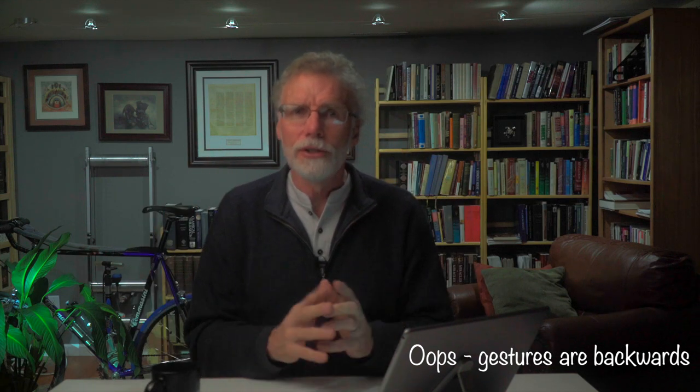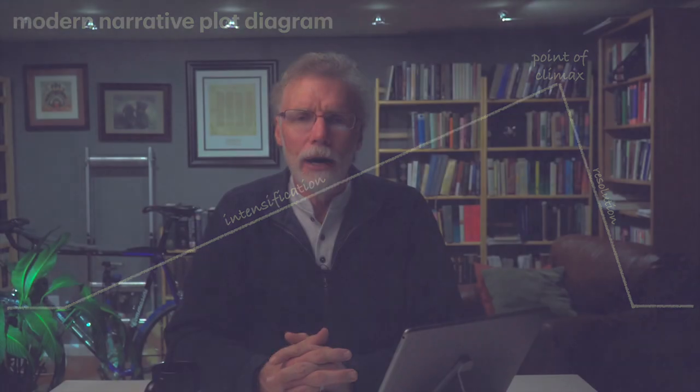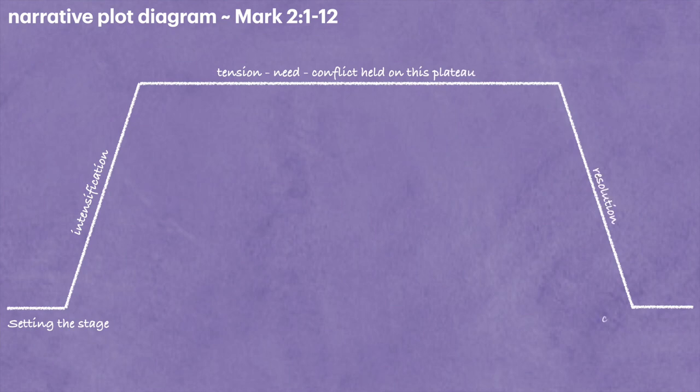We don't tell stories that way today. We tend to have a very long period of intensification, reach a climax, and then have a quick resolution. Take any detective movie on TV — usually an hour long — you'll notice that for about 47 to 50 minutes you have intensification of conflict, then all of a sudden you have the climax, the big fight scene or the arrest, and then it resolves very quickly. But in the biblical text, they like to intensify the story very quickly and resolve it very quickly, and hold you at a plateau — not a climax — for a long time.